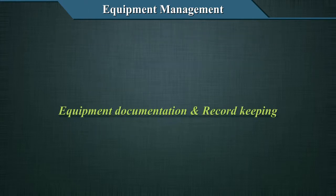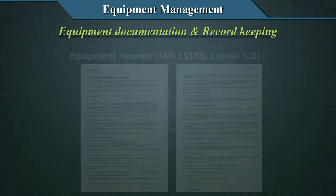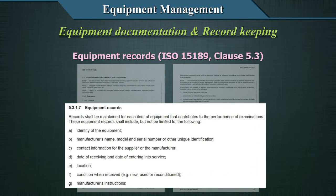Equipment Documentation and Record Keeping: Equipment documents and records are an essential part of the quality system and encompass the full life of the equipment. Equipment records as per ISO 15189 Clause 5.3 should be proper, regular, and legible, and must be maintained for each item of equipment that contributes to the performance of tests in the lab.